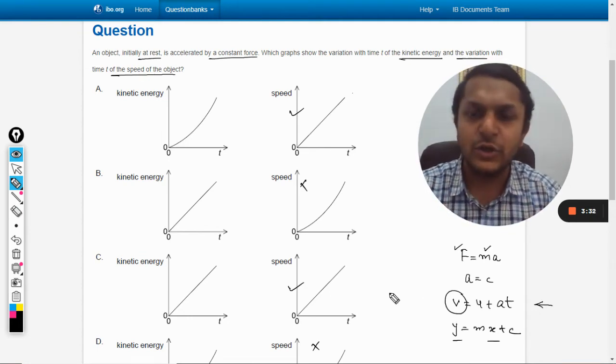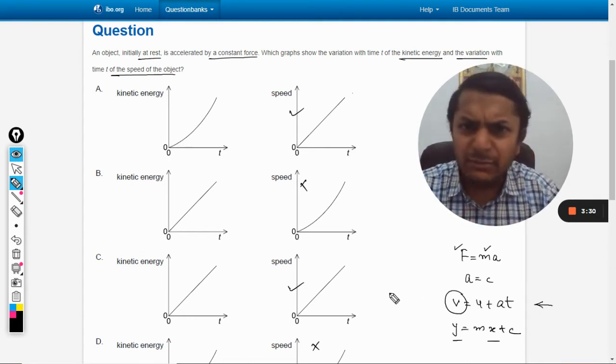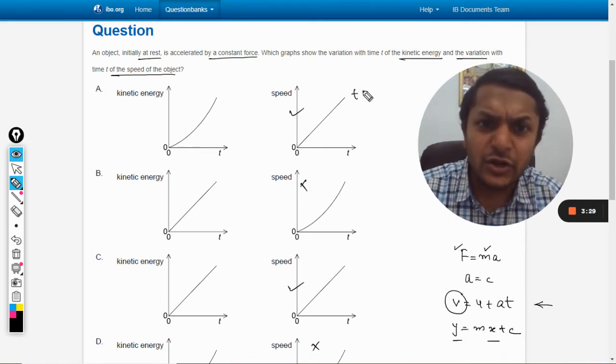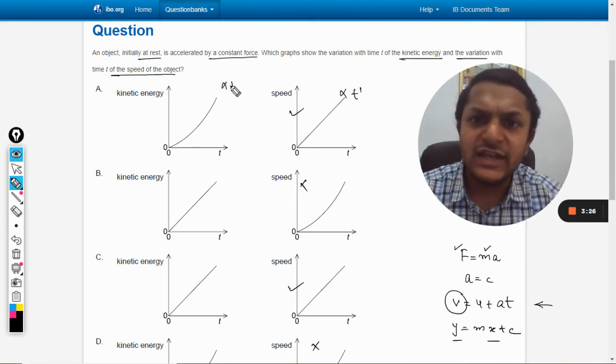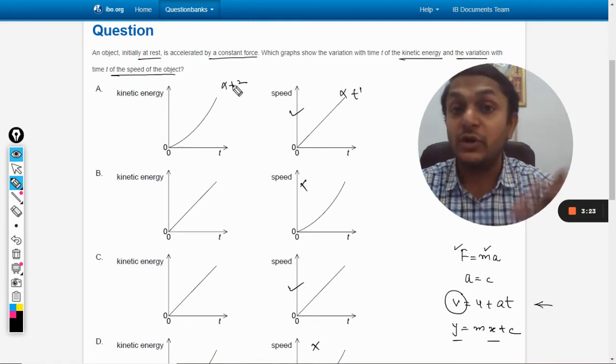We have to square this, so it will be v squared. So simple. If it is the variation of t raised to power 1, directly put into this, so this has to be directly proportional to t squared because it is now squared.